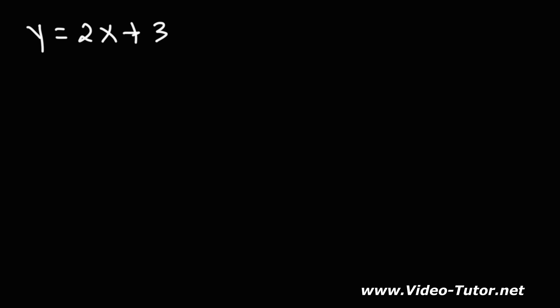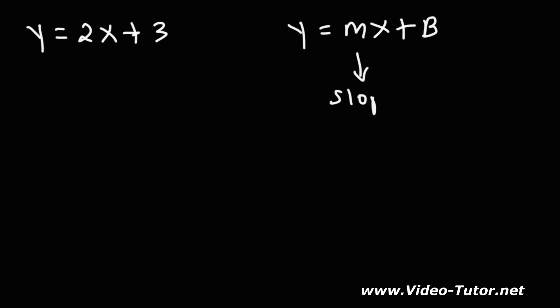In this video, we're going to talk about how to find the slope and y-intercept from a linear equation. It's important to be familiar with the slope-intercept form of a linear equation. M represents the slope — M is the number in front of x. B represents the y-intercept.